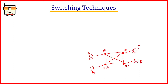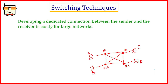Welcome back to the channel. In this video we will be studying about switching techniques. Before starting with different types of switching techniques, let us first understand what switching is and why there is a need for it. Whenever you want to communicate with any device in the world, the best option would be to develop a dedicated connection with that device using physical wires, but for larger networks, when you want to communicate with many different people across the globe, developing dedicated connections between all possible combinations of senders and receivers is not a feasible option.